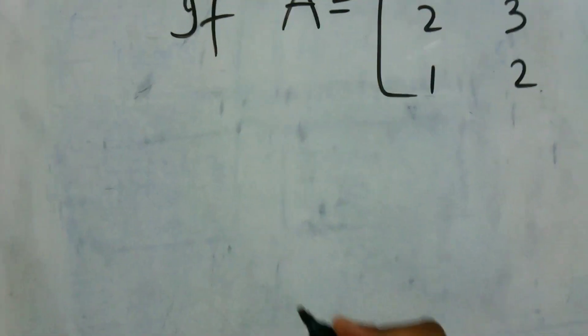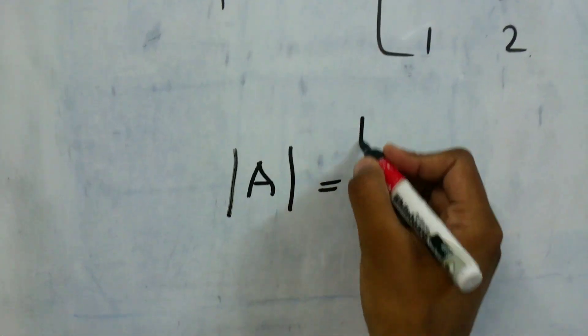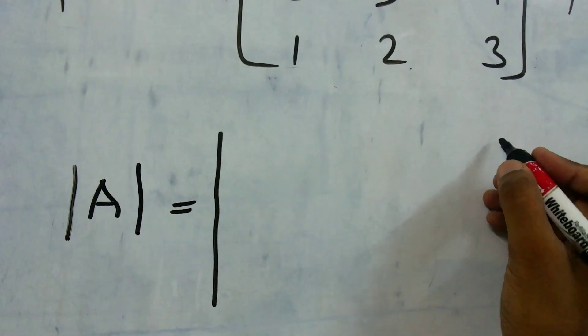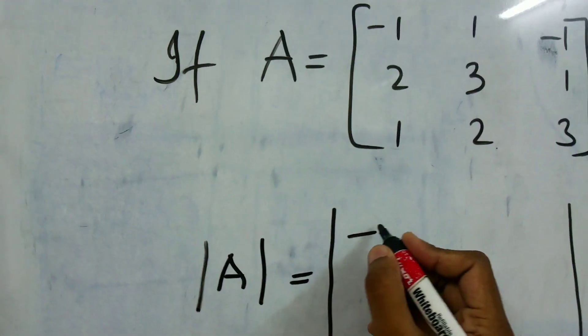To find the determinant of A, first we will write it as this and we will write all the elements between these two parallel lines.